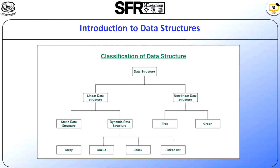The classification of data structures: data structures are divided into two main categories — linear data structures and non-linear data structures. Under linear data structures, there are two broad categories: static data structures and dynamic data structures. For example, an array is considered a static data structure. Static means a fixed number of memory locations.